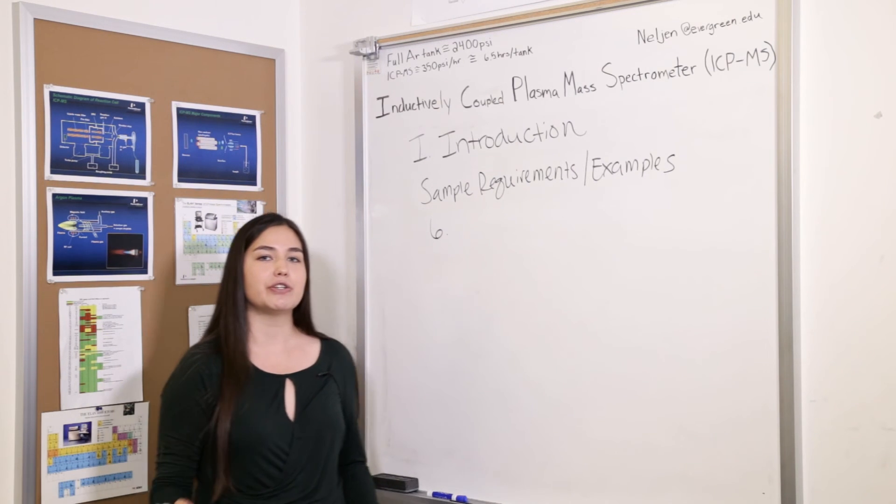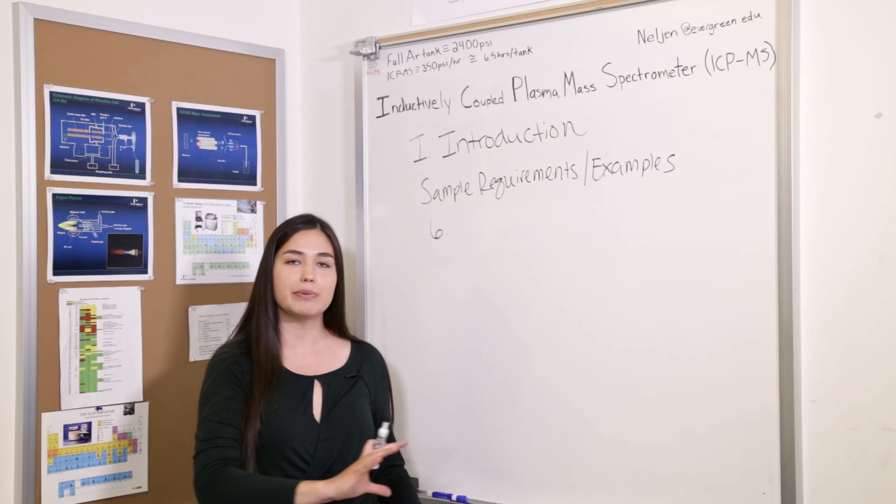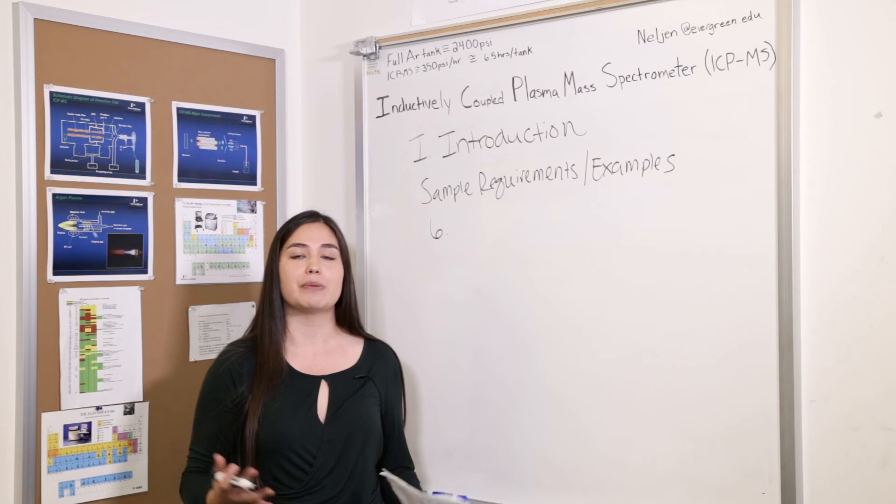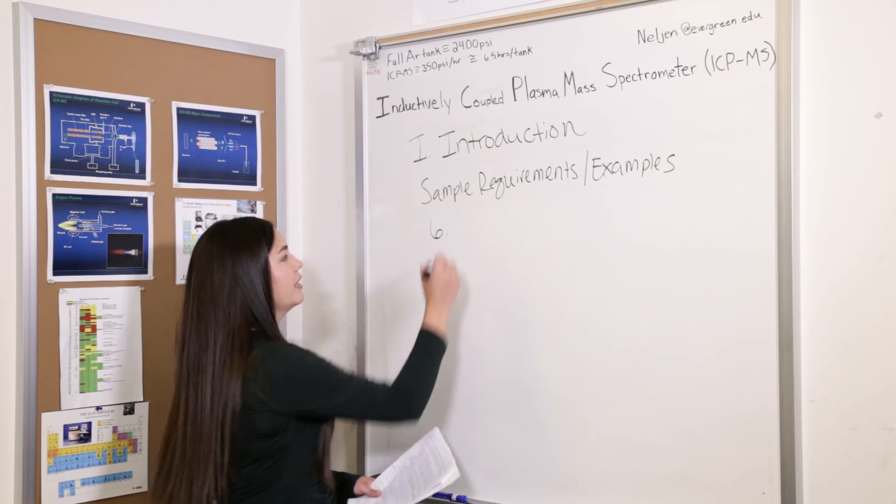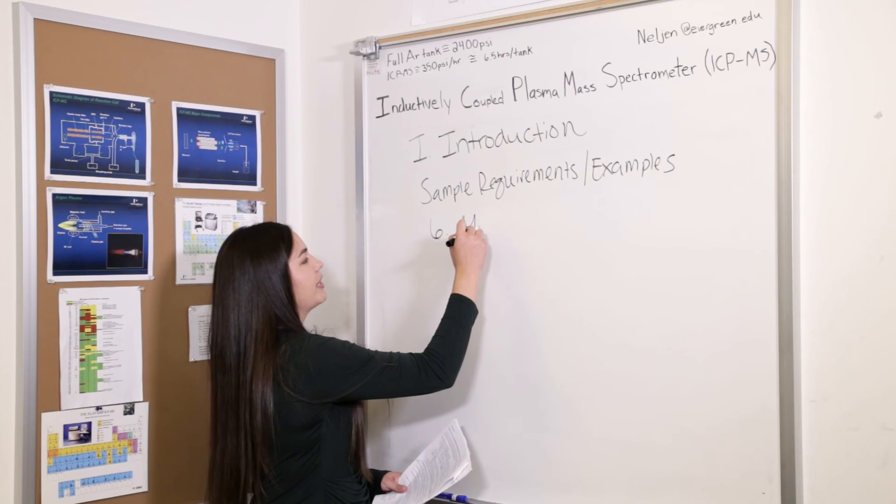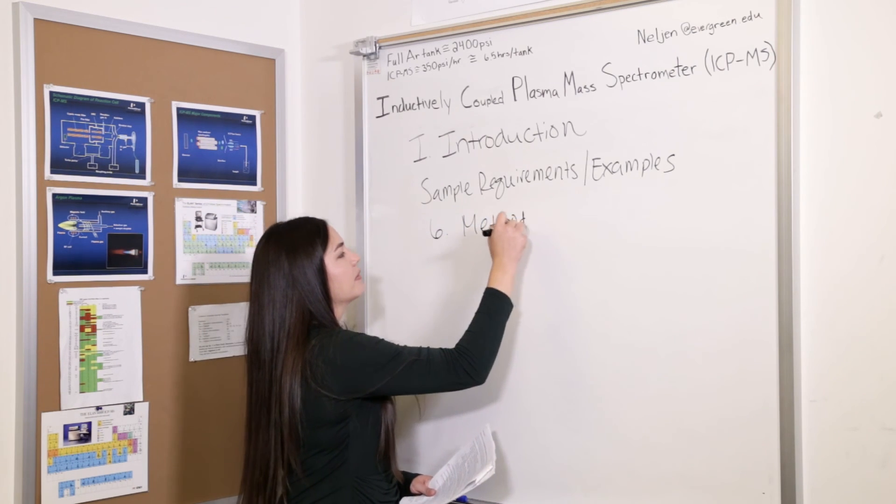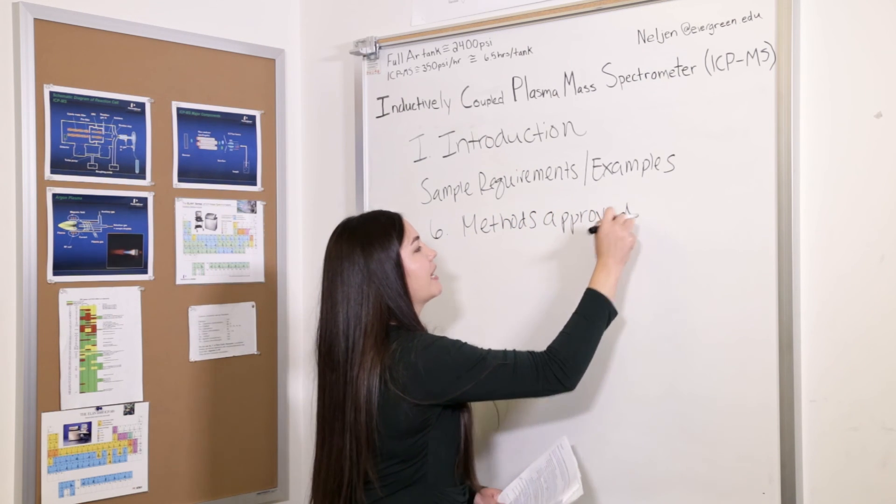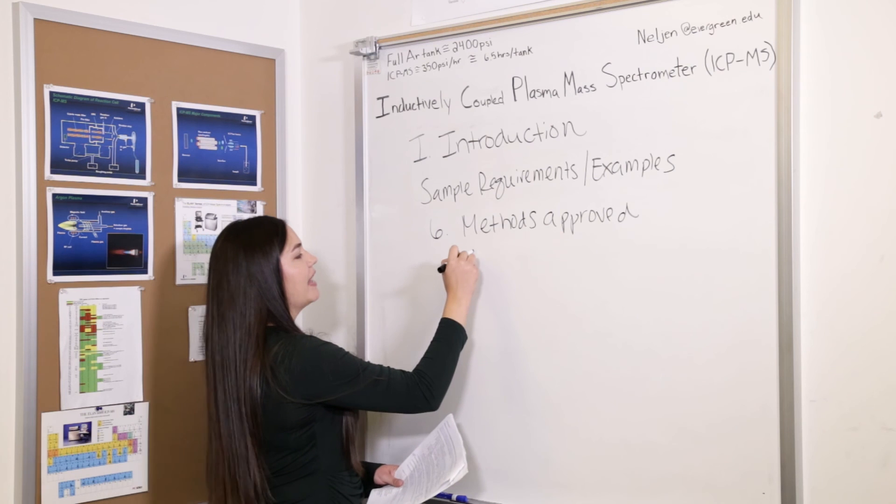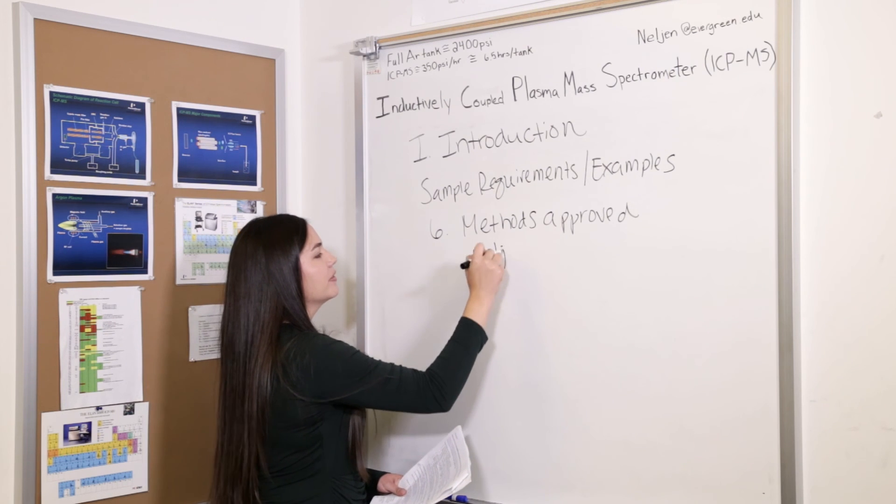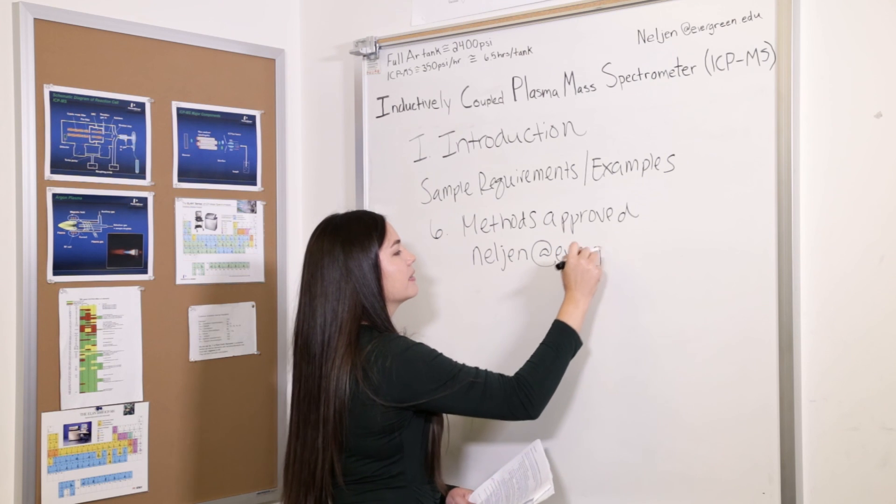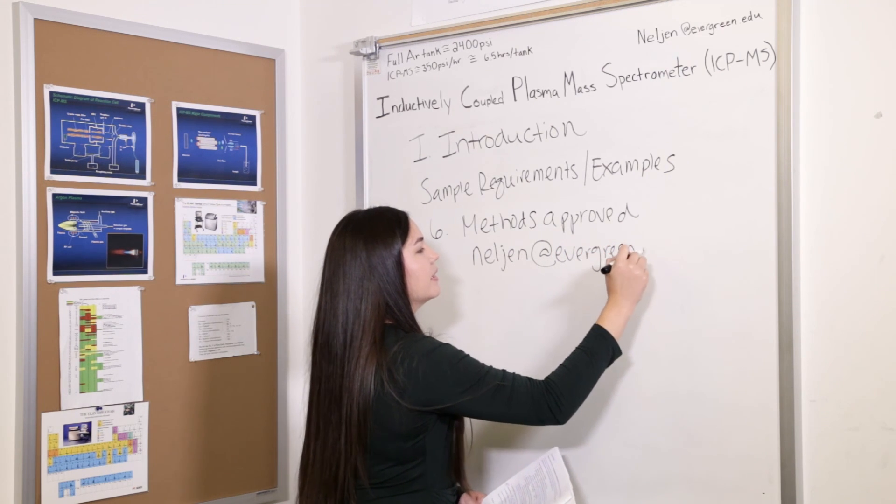In the meantime, you want to do a literature review of the available literature on available methods and try to come up with a method that you can bring to those workshops. To contact Jenna, the best way is to contact her by email, and that is at nelljen at evergreen.edu.